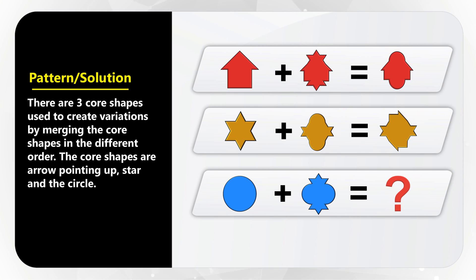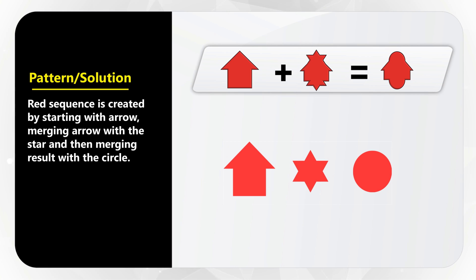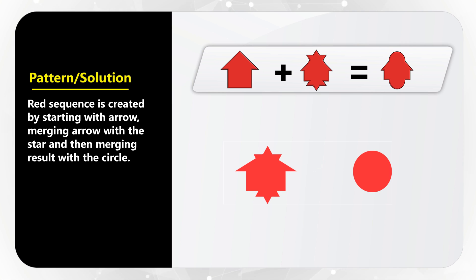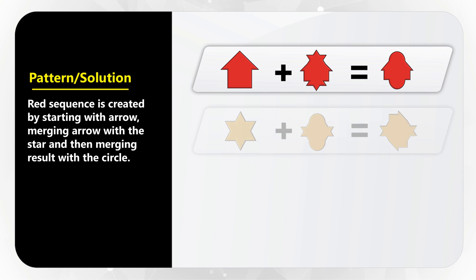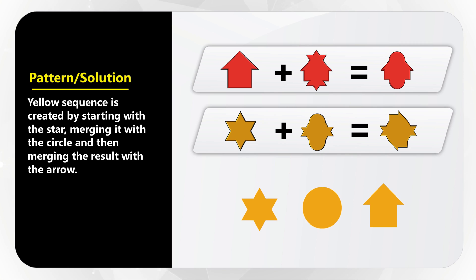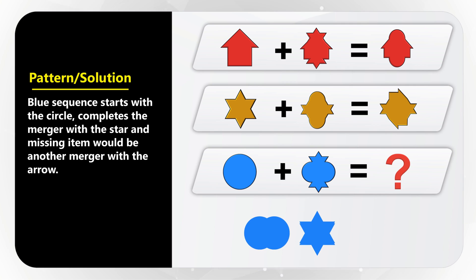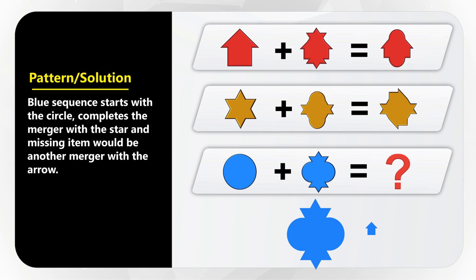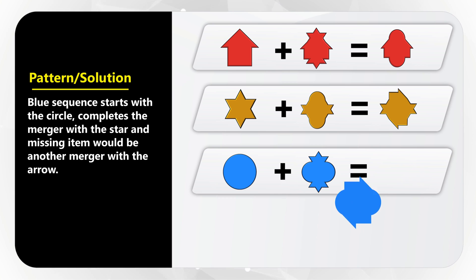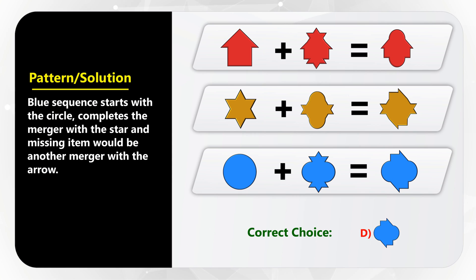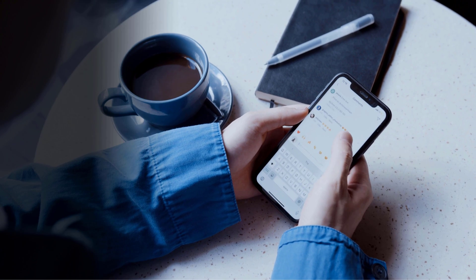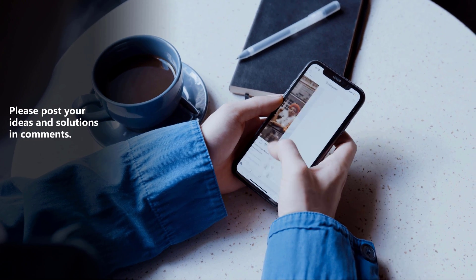Let me demonstrate starting with the red sequence. The red sequence is created by starting with the arrow, merging the arrow with the star, and then merging the result with the circle. The yellow expression is created by starting with the star, merging it with the circle, and then merging the result with the arrow. The blue sequence starts with the circle, completes the merger with the star, and then the missing item is created by doing another merger with the arrow. The objects here are presented as expressions rather than a sequence — there's no other reason to do it than to confuse you.